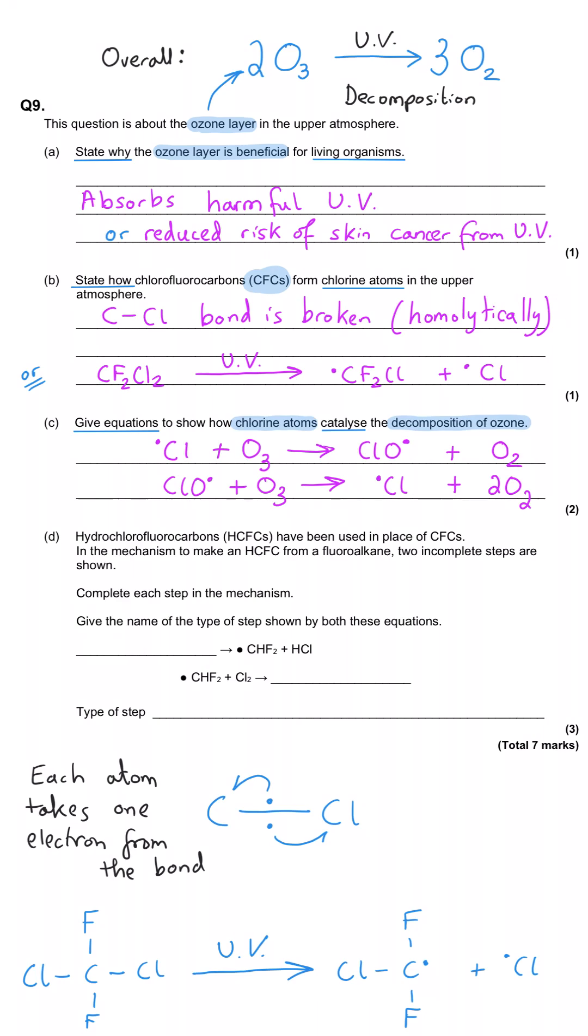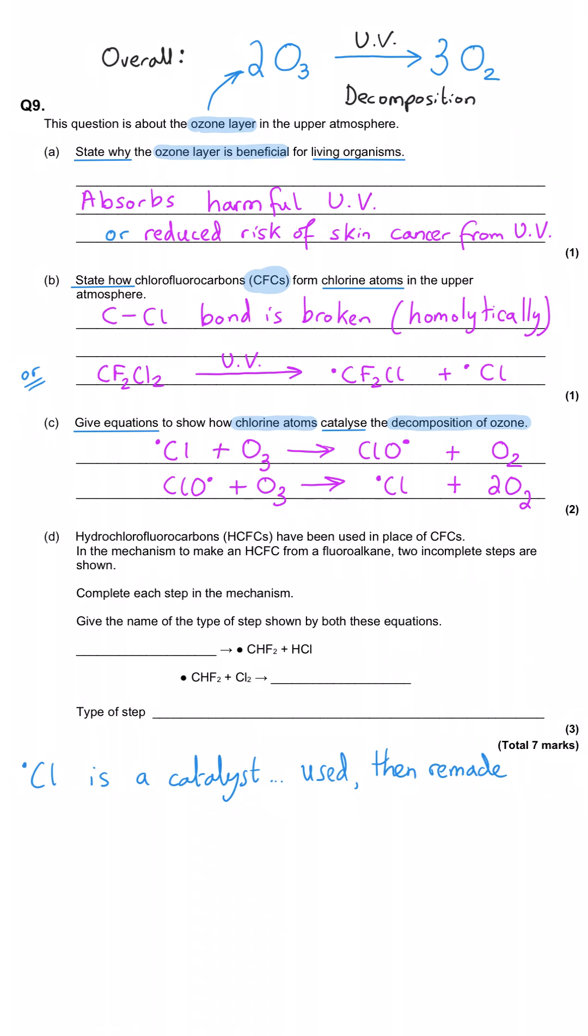But it's important to note from these equations that the chlorine free radical is acting as a catalyst, as the question says. And we know that because it is a reactant of the first step, but a product of the second step. So overall, it isn't changed. And that's a characteristic of a catalyst.